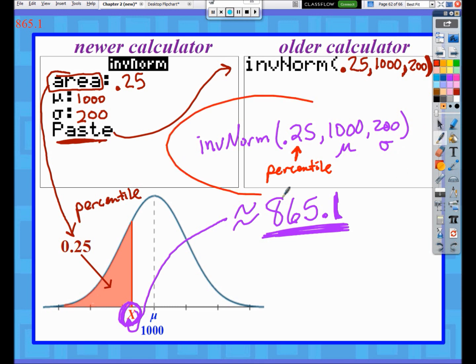This is the work I would want to see: the calculator command with the values and labeling percentile, mean, and standard deviation, and then you can write out what that answer is.